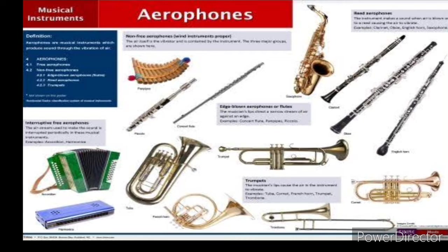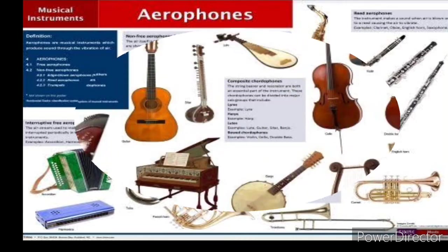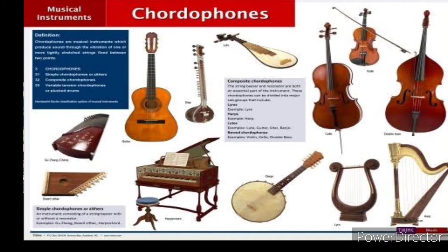Next are chordophones. Chordophones are instruments mainly made of strings. The strings help to produce and sustain the sound that is played. Examples include the ukulele, violin, guitar, harp, and so on.